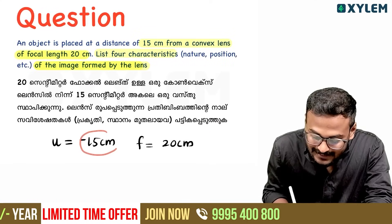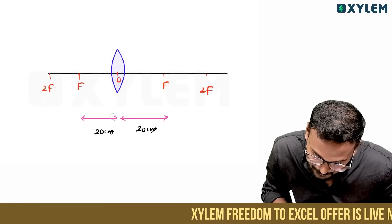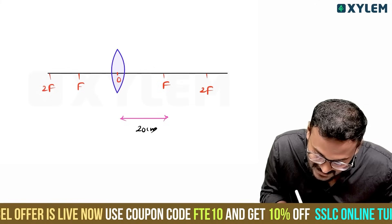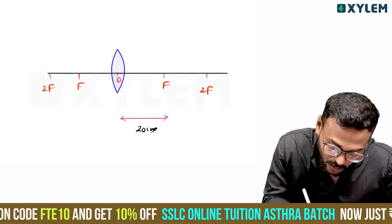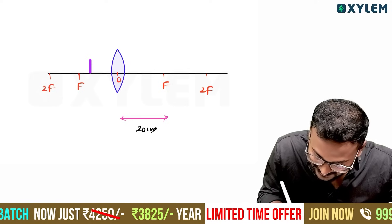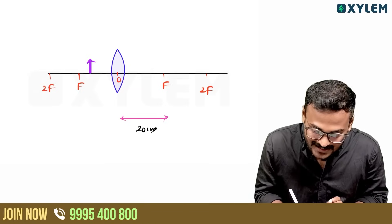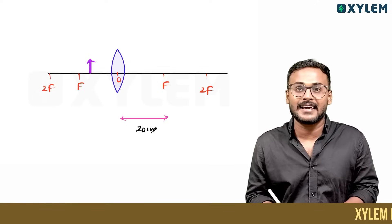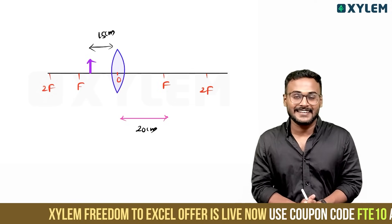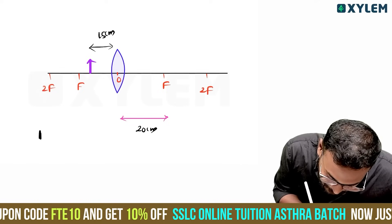The object is 15 centimeters from the lens. Since the focal length is 20cm and the object is at 15cm, the object is placed between the focus F and the optic center. Our focus is most important here — the object is between F and the optical center.